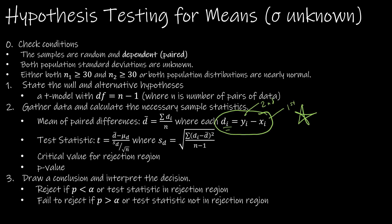The test statistic, or T score, is found by taking the mean of paired differences minus the hypothesized difference, divided by the standard deviation of the differences divided by the square root of N. Even though D-bar is not difficult to find, the standard deviation is deceptively difficult — you'd need several columns to find all the deviations from the mean, square them, divide by N minus one, take the square root, and then plug that in to find the T score.